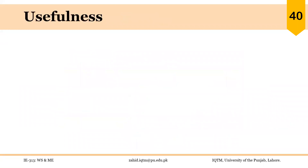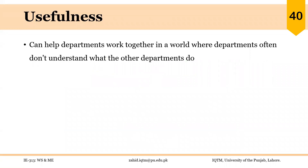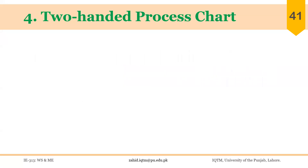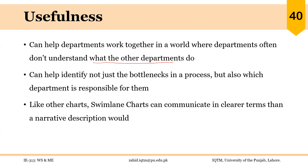This is the example we have just discussed. The benefit of using this chart is that it can help departments work together in a world where departments often don't understand what the other departments do. Each department can understand which activities are performed before a job is referred to their department, or what activities are done after they process a certain job or information. This chart can help identify not just the bottlenecks in a process but also which department is responsible for them. Like other charts, swim lane charts can communicate in clearer terms than a narrative description would. This was swim lane chart — a very useful chart.